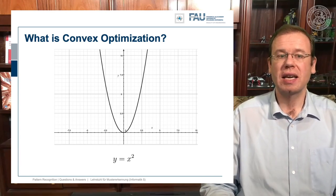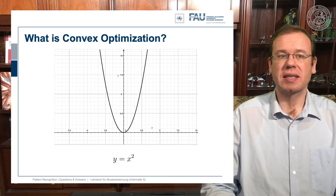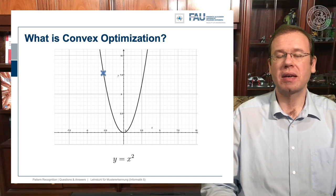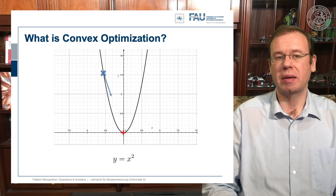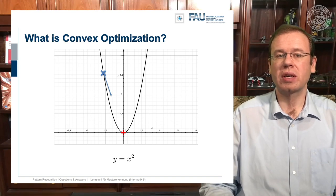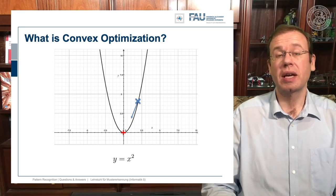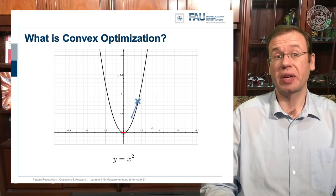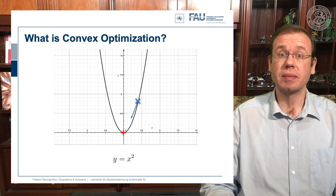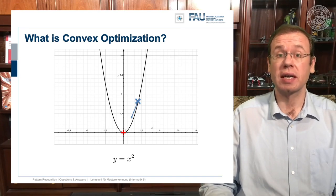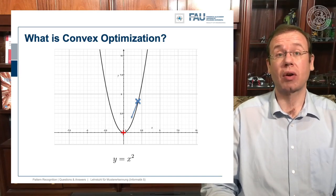This is a convex function: y equals x squared. The cool thing about this is, if we do a minimization — it doesn't matter if we start here and follow the negative gradient direction, we end up at the minimum. And if we were to initialize elsewhere, we follow the gradient direction and still get the same minimum. So that's the cool thing about convex optimization: it doesn't matter how you initialize, you will end up with a global minimum.